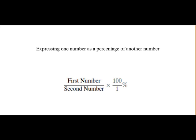Here we'll take a look at expressing one number as a percentage of another number. To do that, it's the first number divided by the second number multiplied by 100 over 1.